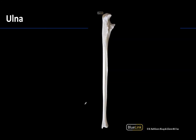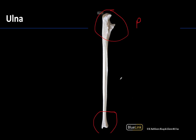Just a reminder regarding what the ulna looks like: recall that it is more complex and larger more proximally, and distally it becomes much smaller. The distal region is really where we're focusing — the ulna becomes much slenderer, less complex, and has little involvement with the radiocarpal or wrist joint.